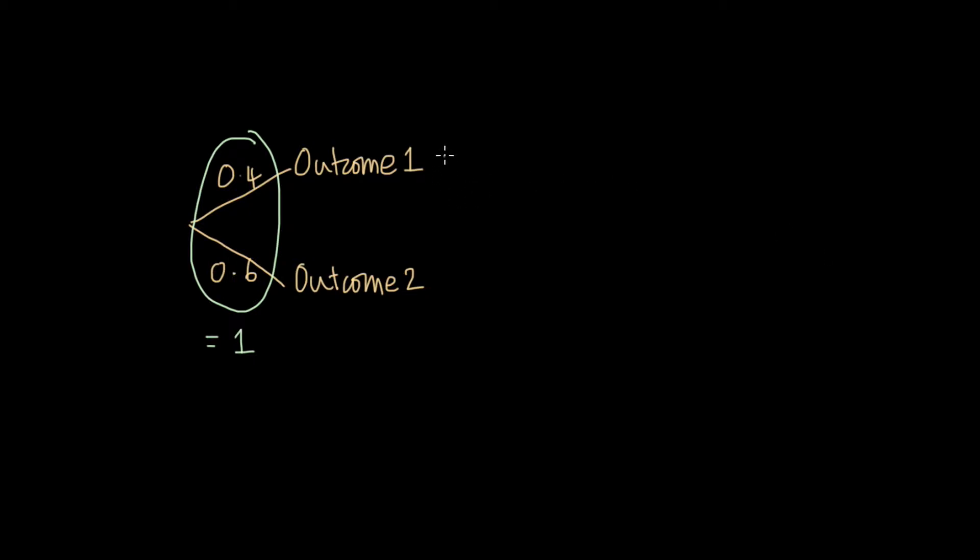If I extend my tree and have two more events coming out from here and two more events coming out from here, then no matter what probabilities I write, this could be 0.5 and 0.5, this could be 0.7 and 0.3. No matter what the probabilities are, the sum of the two always has to be equal to 1.